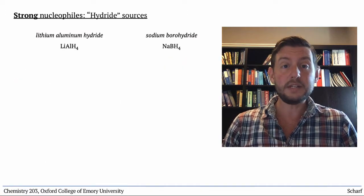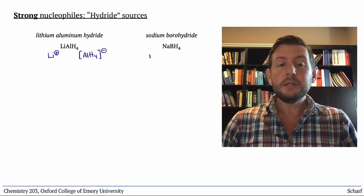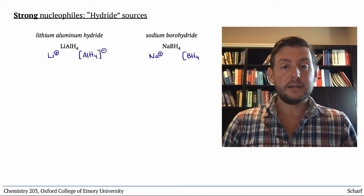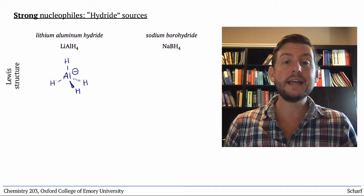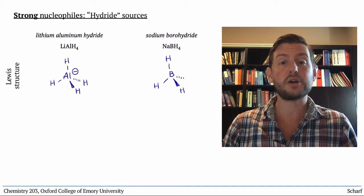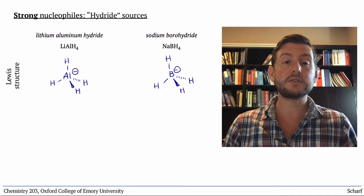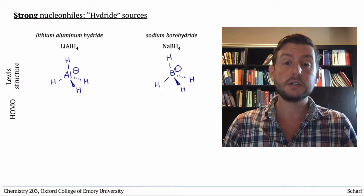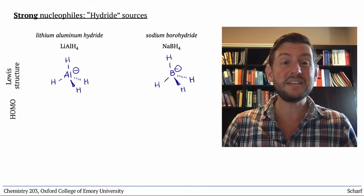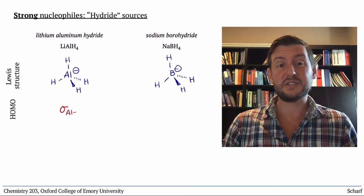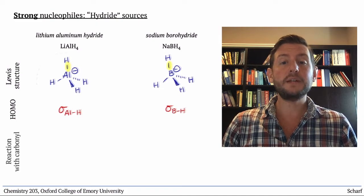So how do these two reagents work? The anions aluminum hydride and borohydride both have similar Lewis structures, a central atom with four hydrogens and a negative formal charge on the central atom. They both act as nucleophiles, so we're interested in their HOMOs. In both cases, they are sigma-bonding orbitals, either sigma-AlH or sigma-BH.